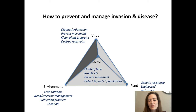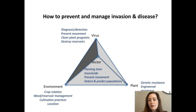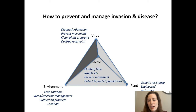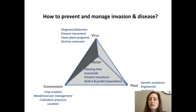The environment is important; we can't always change what's going on outside, but crop management is manageable. We can implement crop rotations to reduce reservoirs for vectors and viruses, manage weeds and other reservoirs, and good cultivation practices and even location can all be important for disrupting conditions conducive for disease. Often with plant viruses, the most effective way to manage disease is to have resistant plants. Plants are selected for genetic resistance, and sometimes resistance can be engineered, like with papaya ringspot virus.